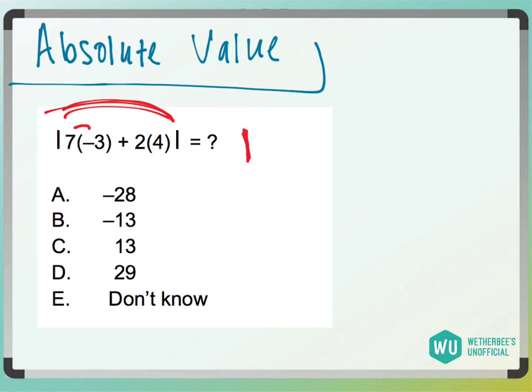So I'm just going to do my absolute value signs. 7 times negative 3 is negative 21, plus 2 times 4 is 8, right? Now, negative 21 plus 8 is negative 13, right?